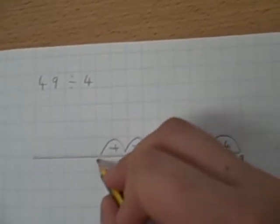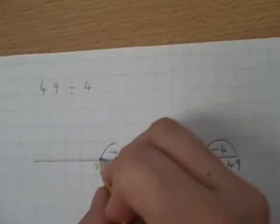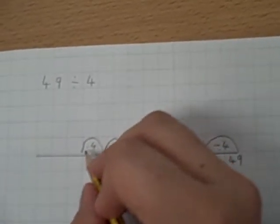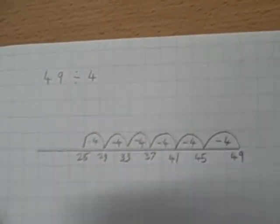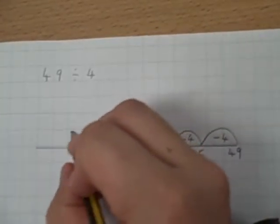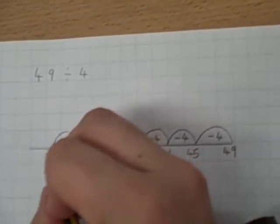Take away 4, 29. Take away 4, 25. Take away 4, 21.